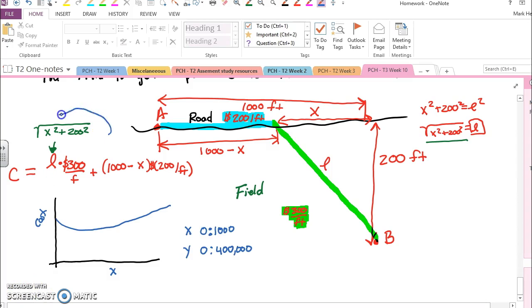So after graphing this cost equation in your calculator as y equals, you end up with a minimum at 178.885 in the x and 244721.36 in the y. Well, this is our cost and this is our x.